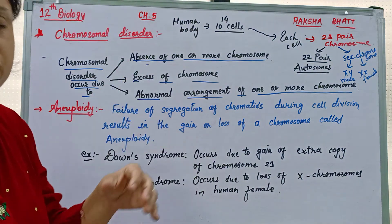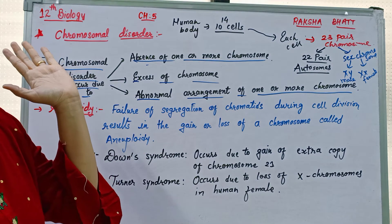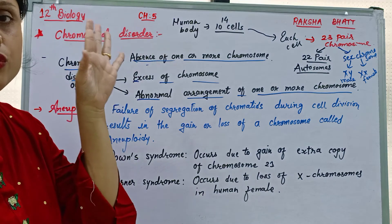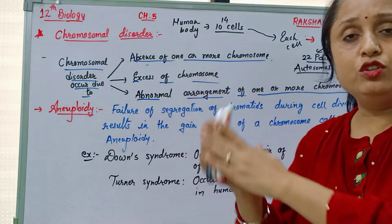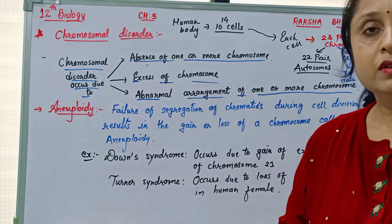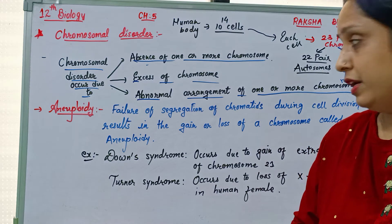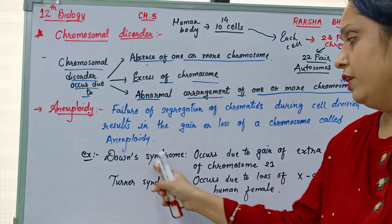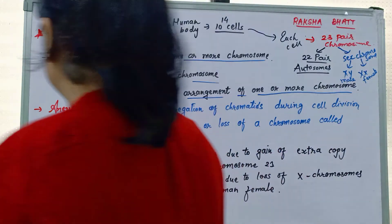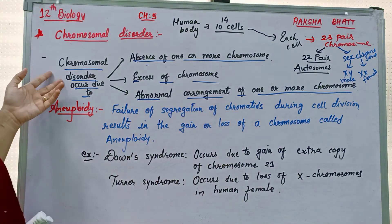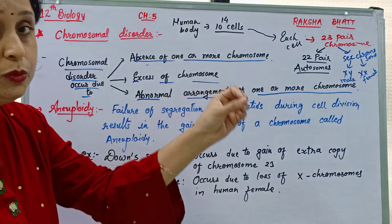If we have 46 chromosomes, they should be perfectly arranged. If there is a problem in arrangement, there is disease. This disease is an inherited disease passed from parent to progeny. However, some parents are sterile and not able to produce offspring. Chromosomal disorder can occur due to decreasing chromosome number, increasing chromosome number, or change in arrangement of chromosomes.